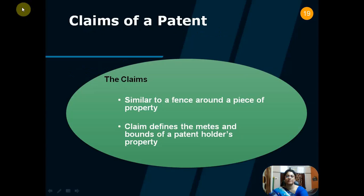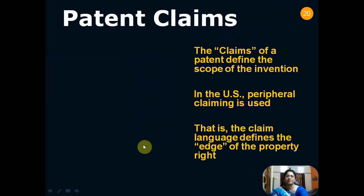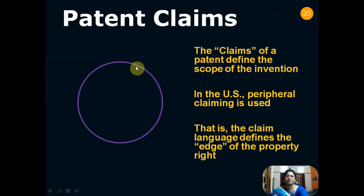What are claims of a patent? The claims are basically similar to a fence around a piece of property — they define the metes and bounds of a patent holder's property. The claims of a patent define the scope of the invention. In the US, peripheral claiming is used; that is, the claim language defines the edge of the property.